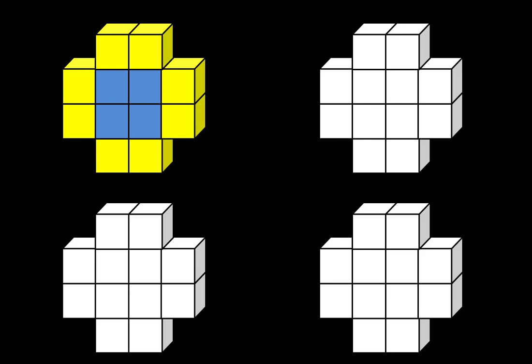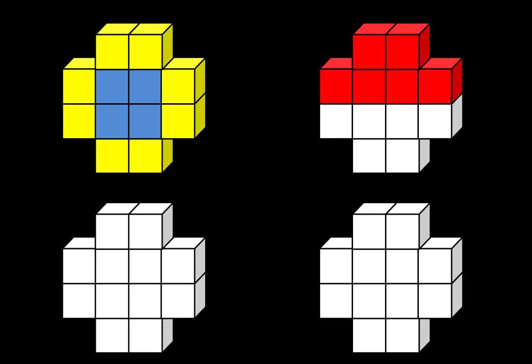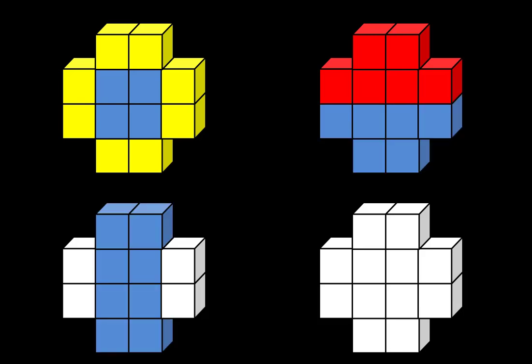Another way some people see it is as a group of six on the top and another group of six on the bottom — so there are two groups of six. Some see a group of eight in the middle and a group of two on the left and another group of two on the right.